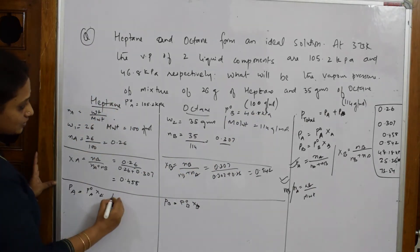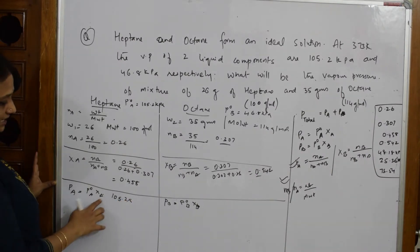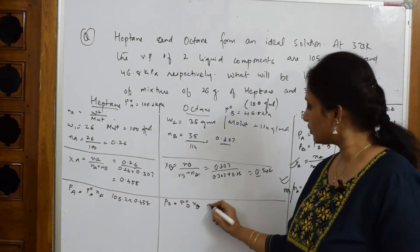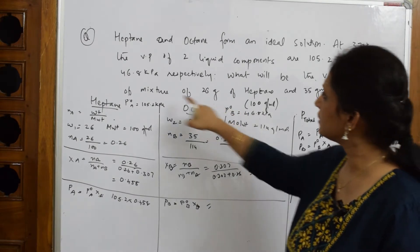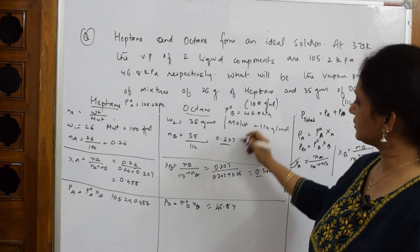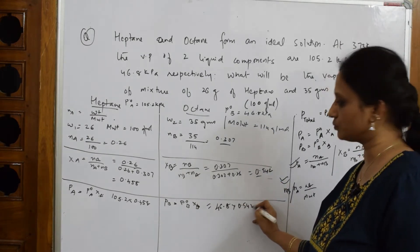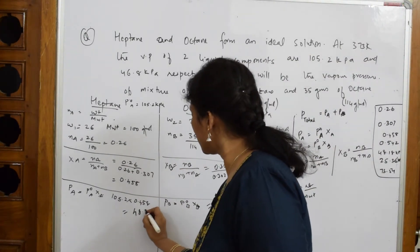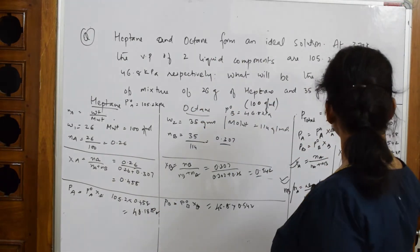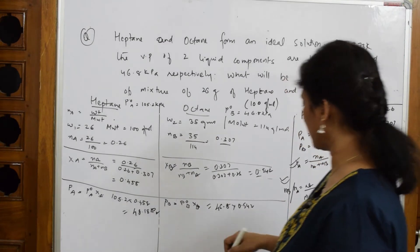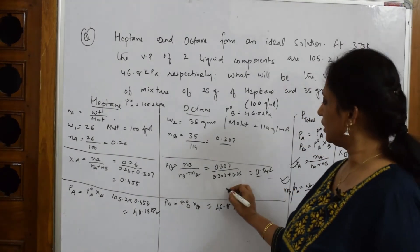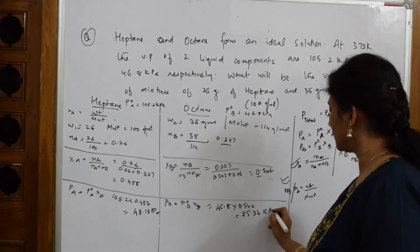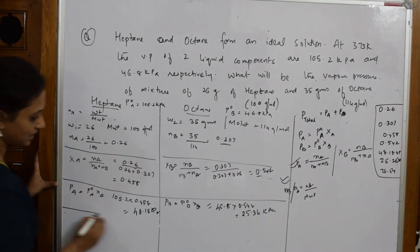Now, substitute this here. Your P naught A value is 105.2. Your XA value which you got is 0.458. Now, let us come back and write for PB. What is P naught B? P naught B given value is 46.8 into what is your XB value which you got? 0.542. When you solve this answer, you get an answer of 48.18 kilopascals unit for your pressure. When I solve, I get an answer of 25.36 kilopascals. I'm almost close completing the numerical. I've got PA and PB.